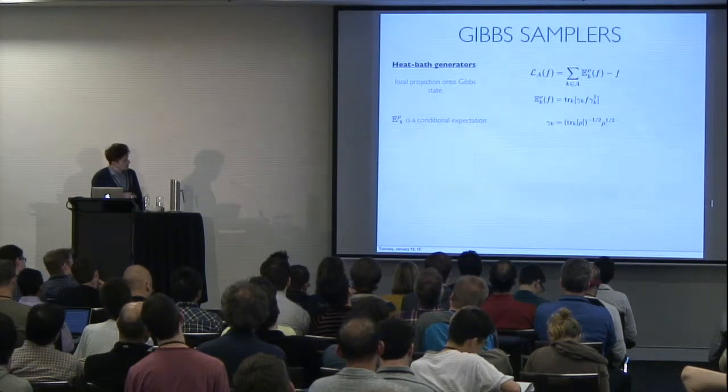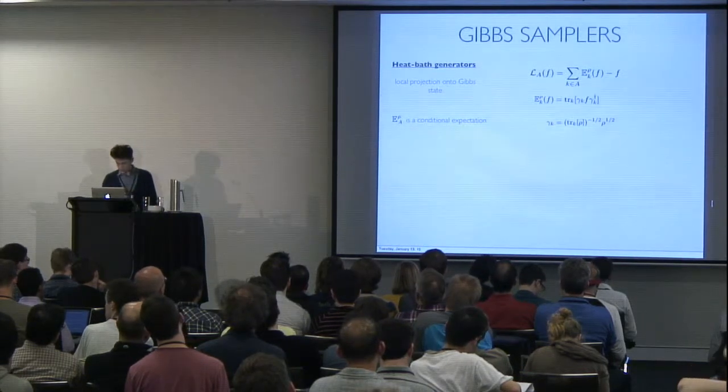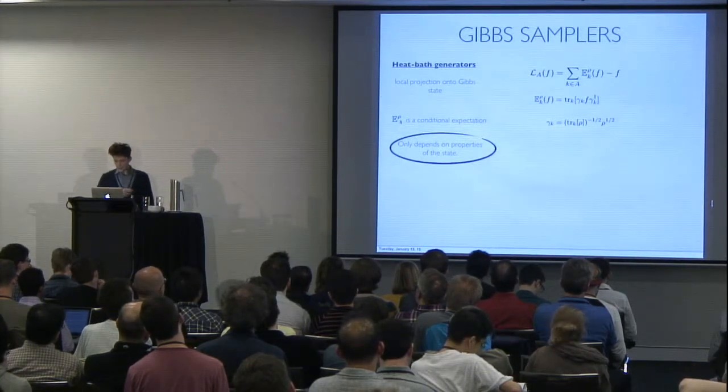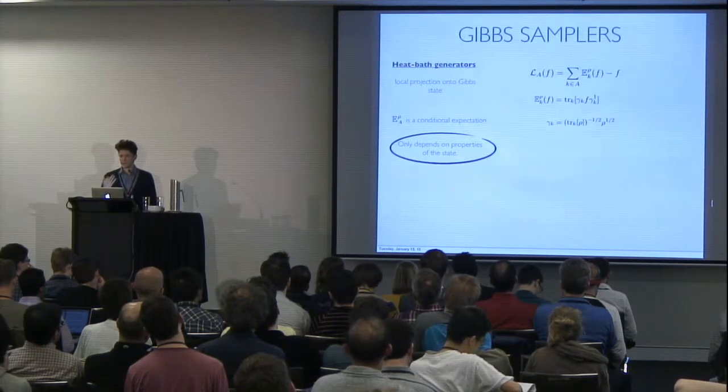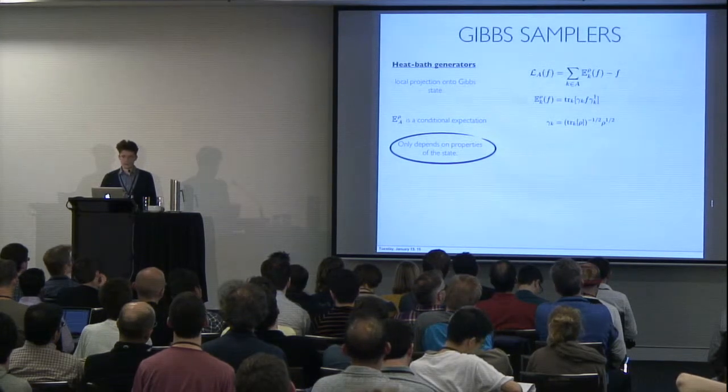So these E operators that we call conditional expectations are going to be local projectors onto the Gibbs state. And one of the nice things about these is that they only depend upon the state. So in principle, you could also project onto general mixed states in this manner.